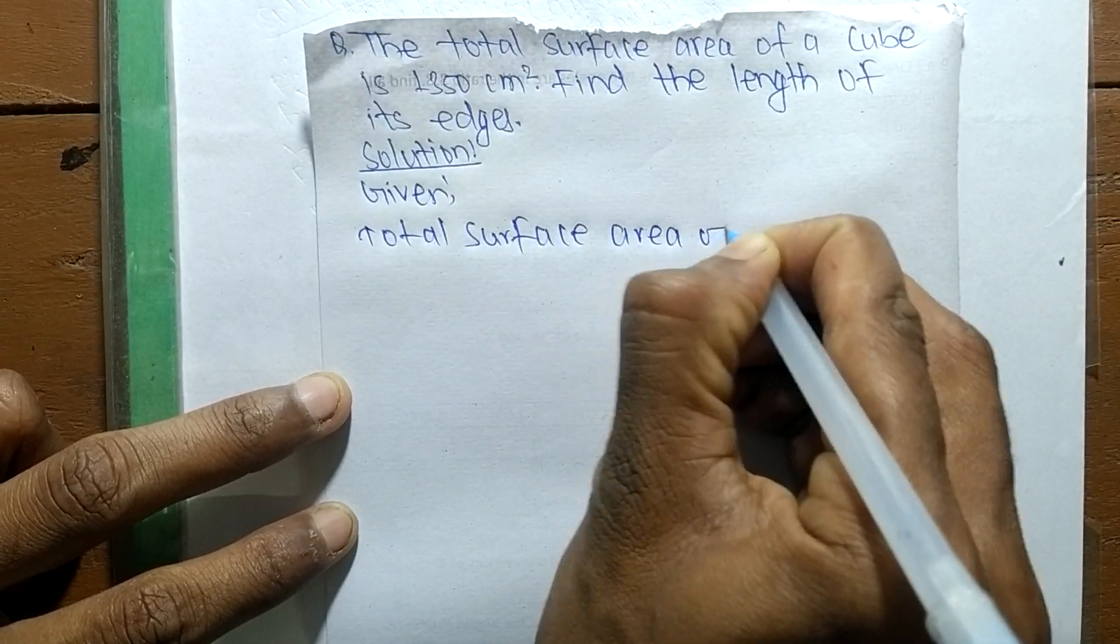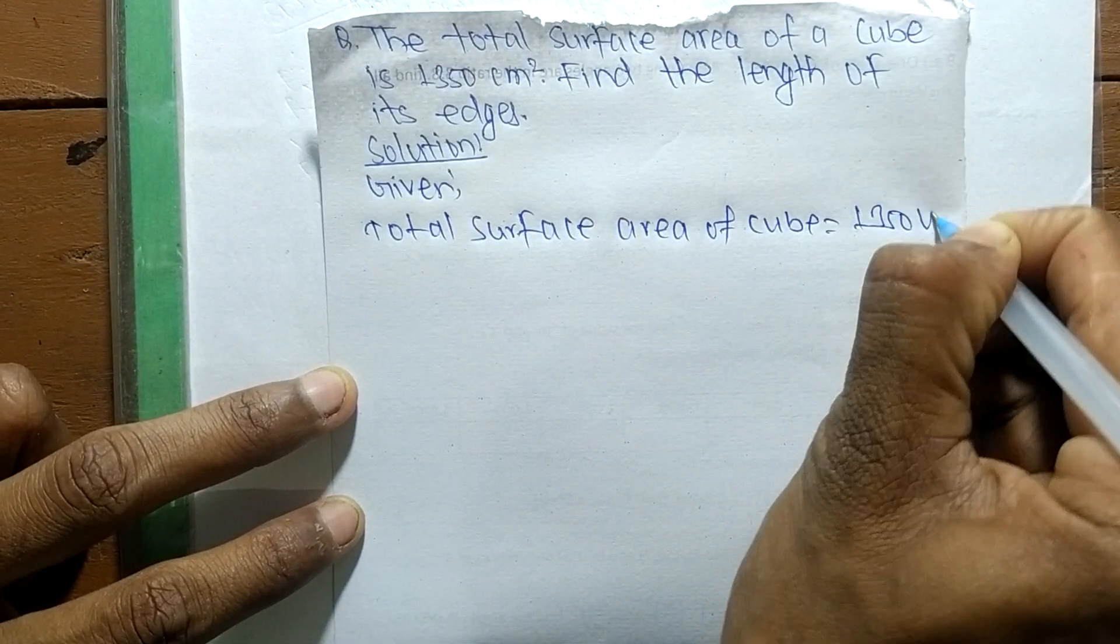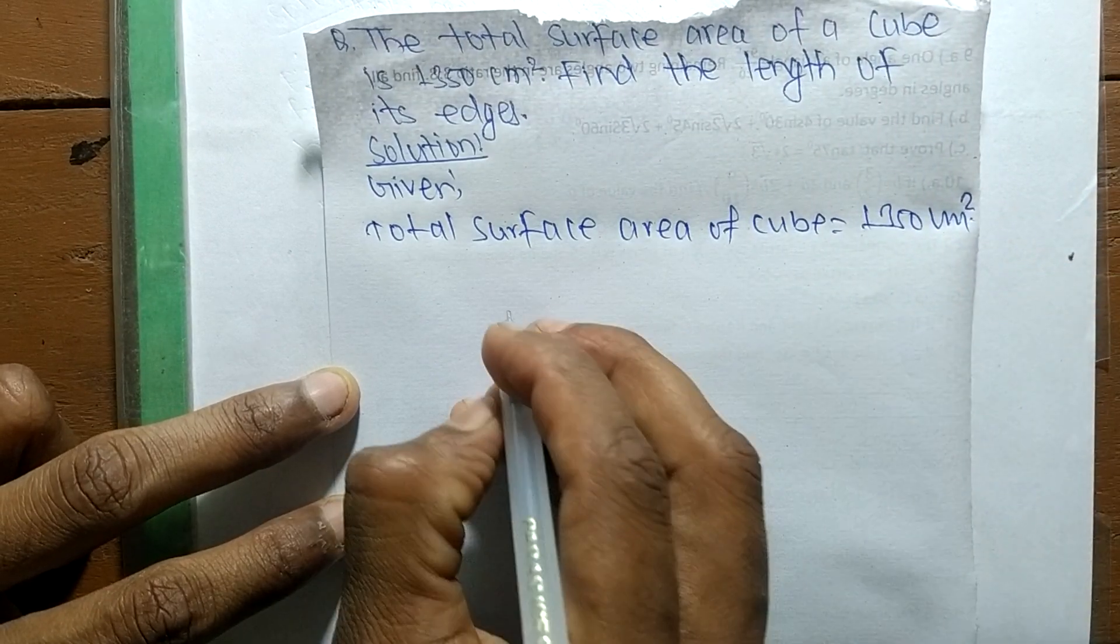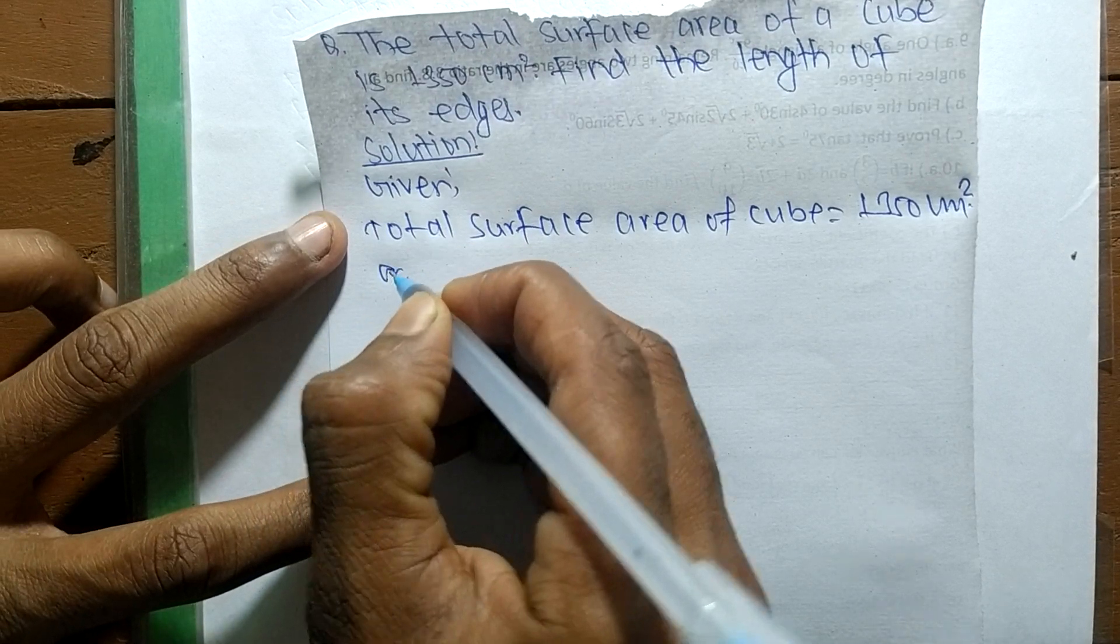We are given the total surface area of a cube is 1350 centimeter square, and we have to find out its length. The formula to calculate the total surface area of a cube is 6L².